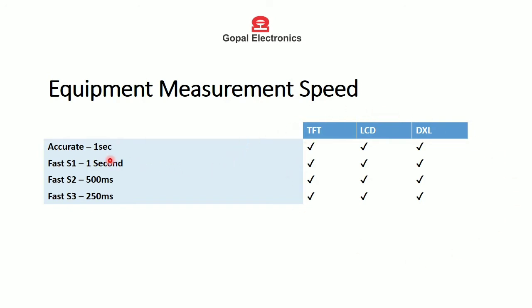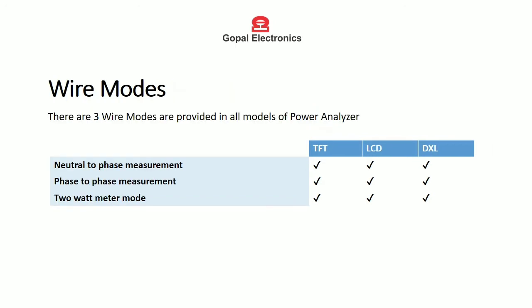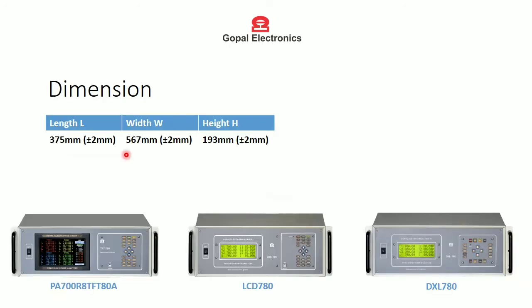Measurement speed ranges from 1 second to 50 milliseconds, and it is most accurate at 1 second. Three to four wire modes are provided in all models of power analyzer: neutral-to-phase measurement and phase-to-phase measurement in 2-wattmeter mode. Dimensions of all three models are the same.